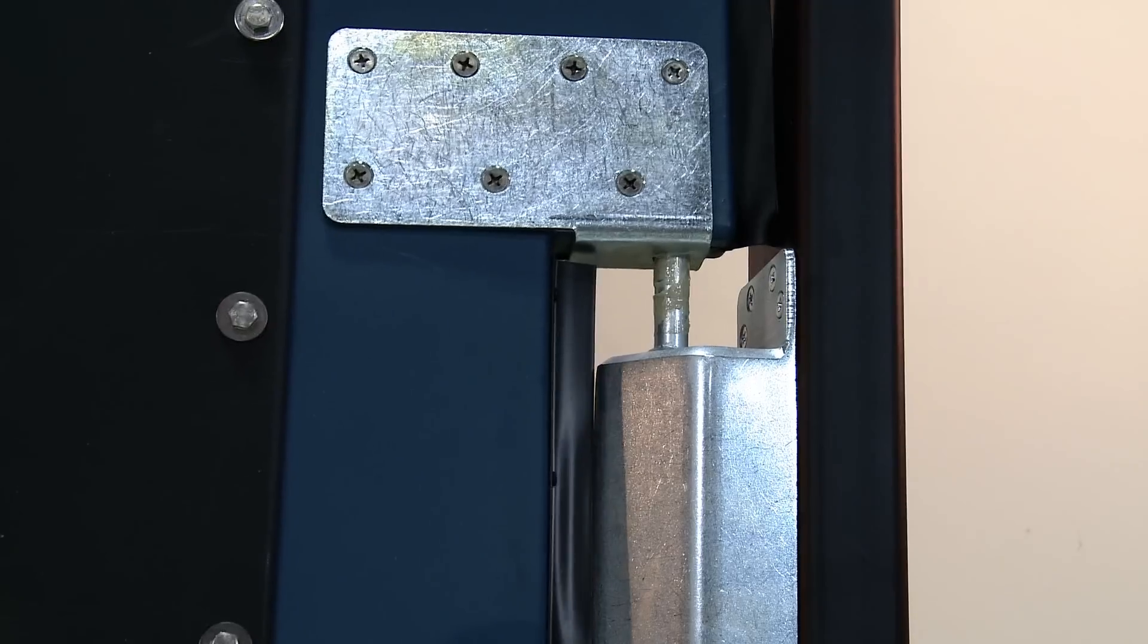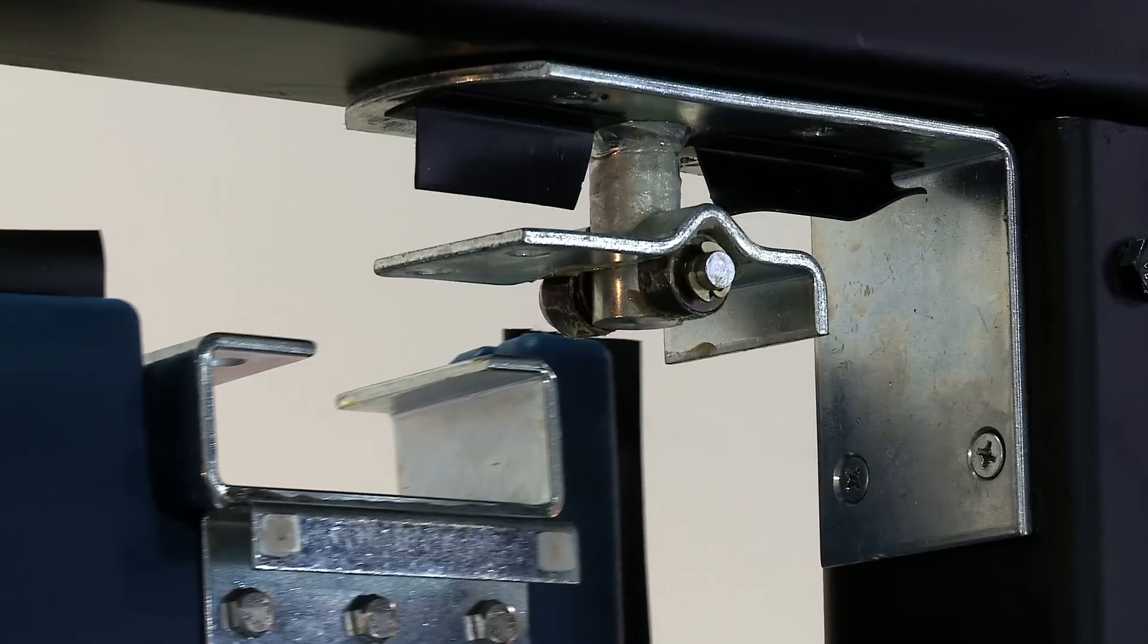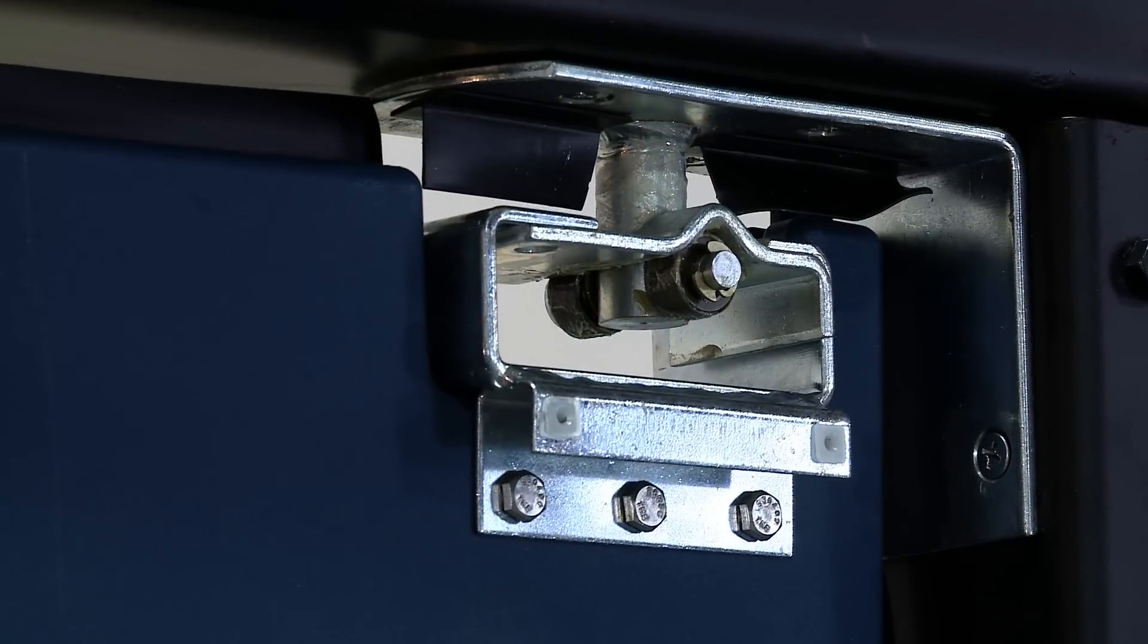Slip the door over the bottom pin and lift slightly to slide the door bracket over the bearing plate. Line up the holes and insert the supplied bolts.